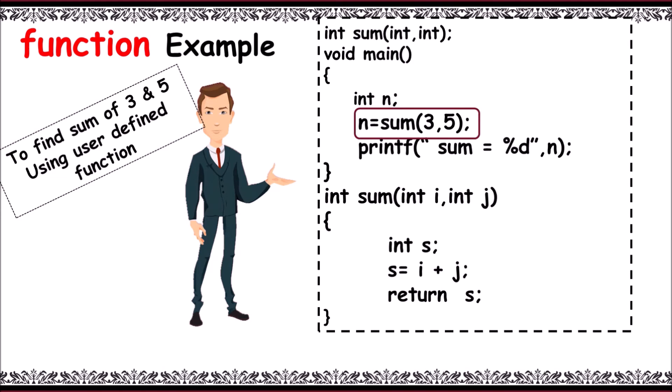Now the function definition stores 3 and 5 in int i and j respectively. Now declare local variable s, sum of i and j, that is 3 and 5 stored in s, then returns s. The value 8 is returned to the main function and stores it into n, and then it prints sum is equal to 8 in the output screen.